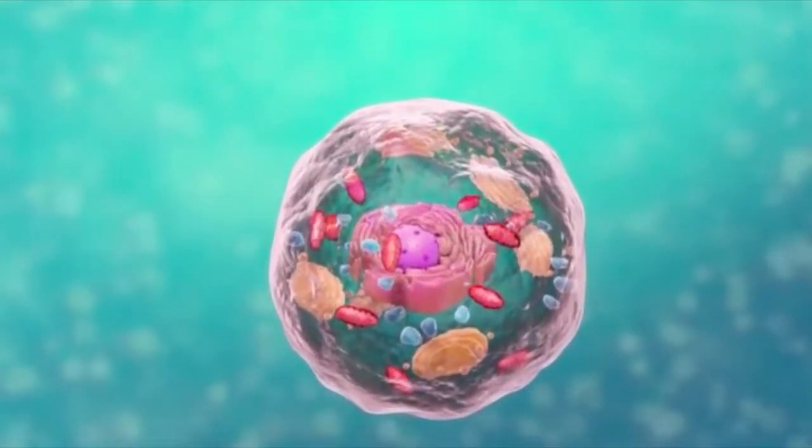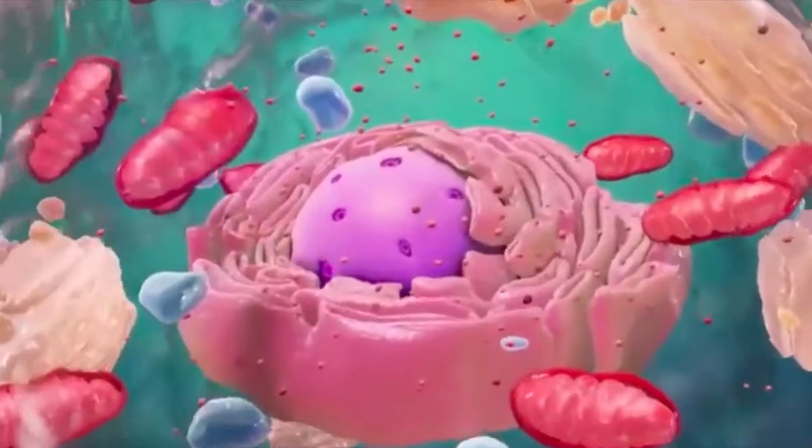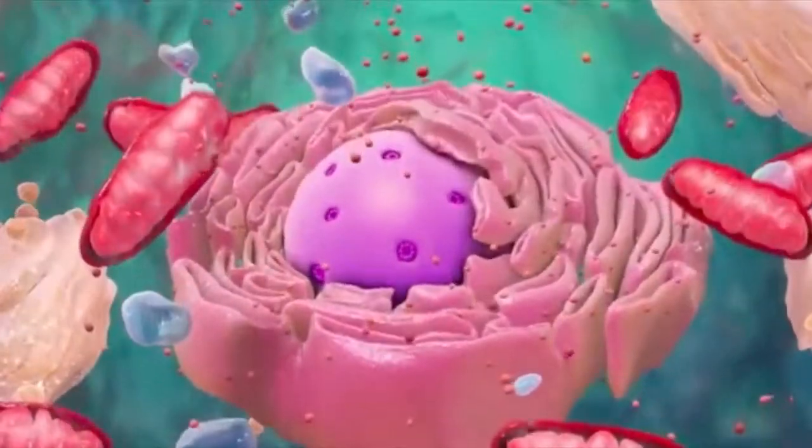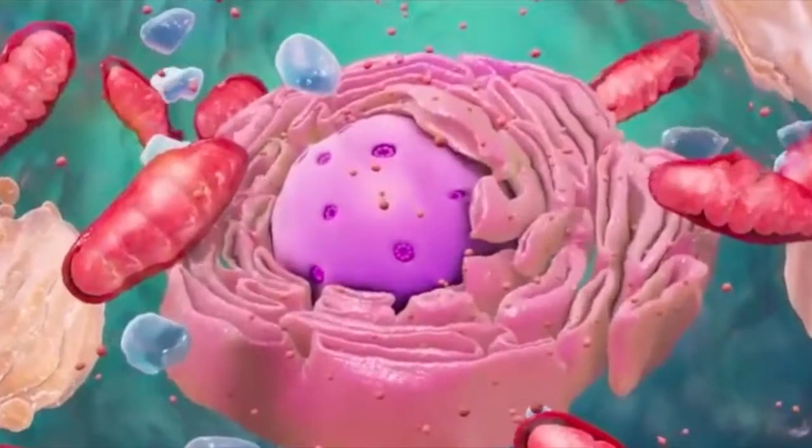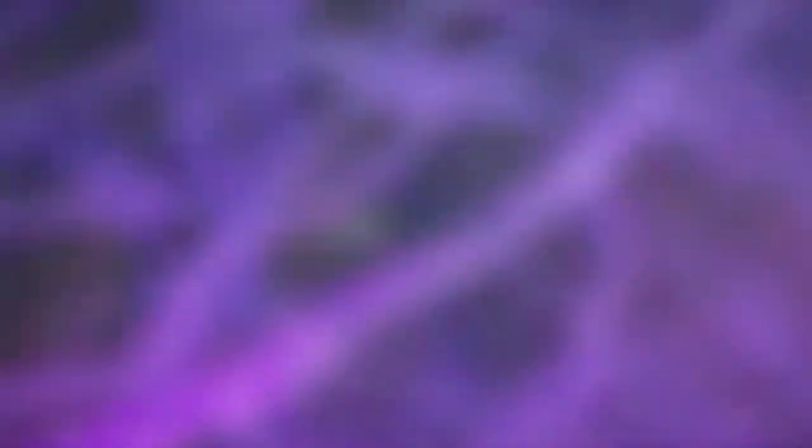Organelles that build proteins. The cell goes through the steps of making proteins that include ribosomes, endoplasmic reticulum, vacuoles, and Golgi apparatus.